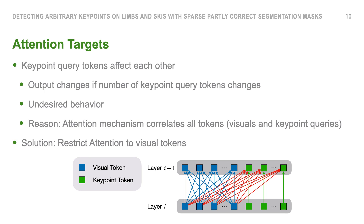As a solution, we restrict the attention mechanism so that visual tokens aggregate information only from other visual tokens and the key point query tokens. In the end, the key point query tokens do not have an effect on any other token — only the visual tokens affect other visual tokens and the key point query tokens.